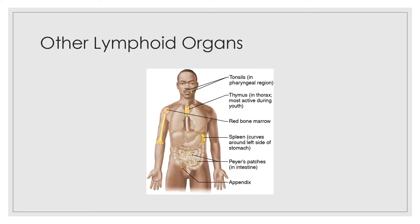Other lymphoid organs include the spleen, the thymus, the tonsils, Peyer's patches, and the appendix, as well as bits of lymphoid tissue scattered in epithelial and connective tissues. All of these organs are predominantly made up of reticular connective tissue and lymphocytes. Although all lymphoid organs have roles in protecting the body, only the lymph nodes filter lymph — none of the other organs filter lymph. The spleen is a soft organ located on the left side of the abdominal cavity, just beneath the diaphragm, curling around the anterolateral aspect of the stomach.